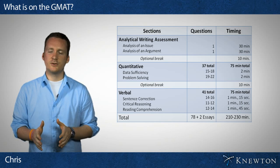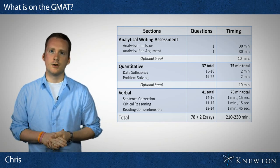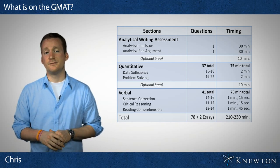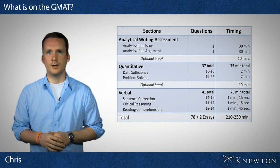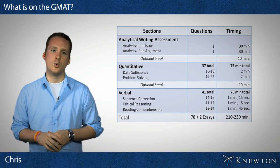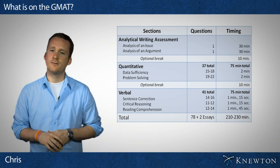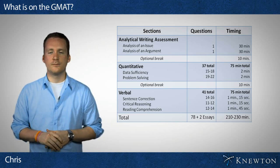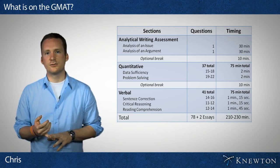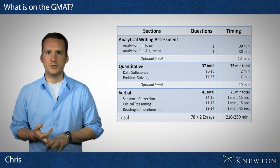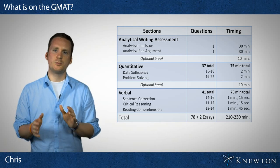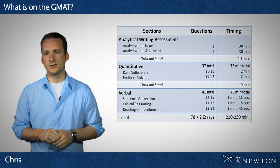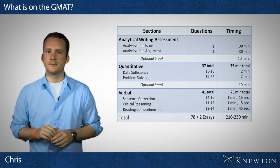After the essays, you get to the multiple choice sections. In quantitative, data sufficiency makes up about 40% of the questions. In all, you'll see 37 quantitative questions with 75 minutes — right around two minutes apiece. Then on the verbal side, you'll see sentence correction, critical reasoning, and reading comprehension questions — 41 total, spread pretty evenly, maybe a little more sentence correction. You also get 75 minutes for that section, which is a little less than two minutes per question.